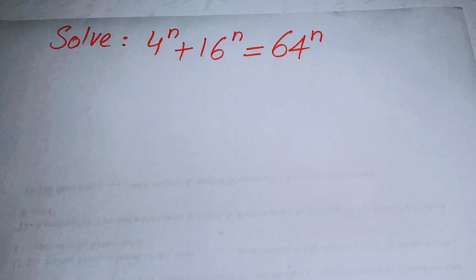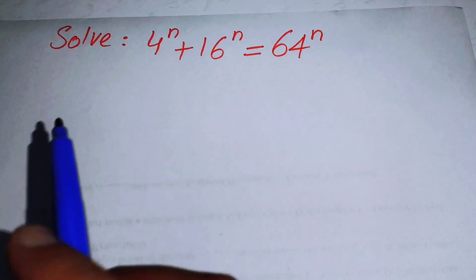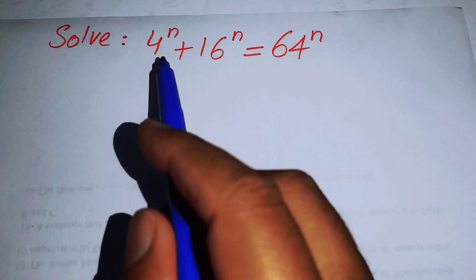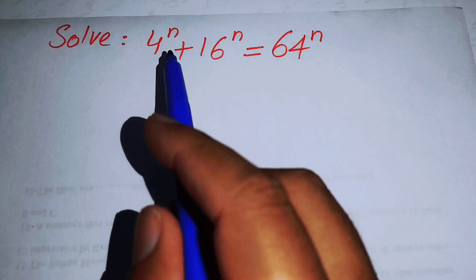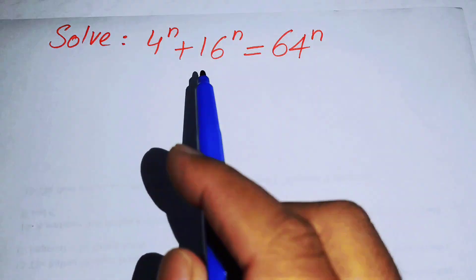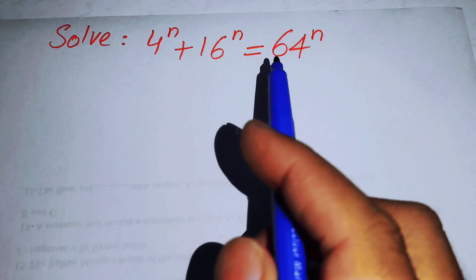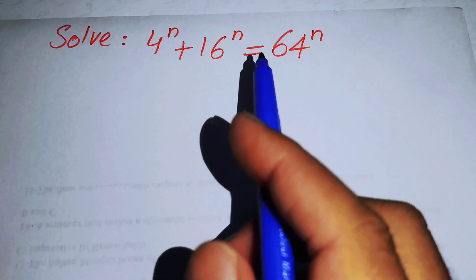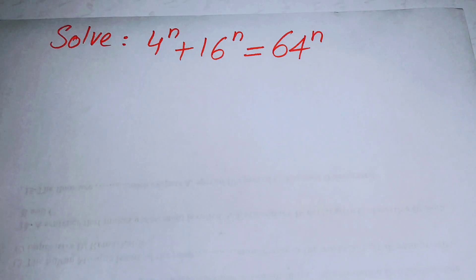Hello everyone, welcome back to the Map of Mathematics. In this video we are going to solve this algebra problem: 4 to the power of n plus 16 to the power of n equals 64 to the power of n. We will solve this problem for the values of n.